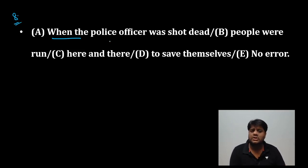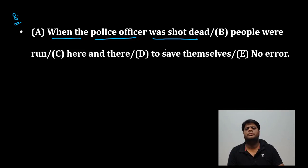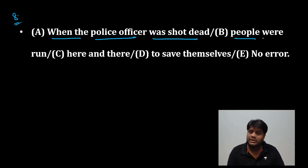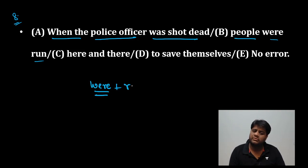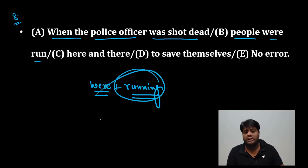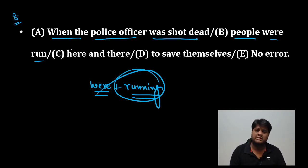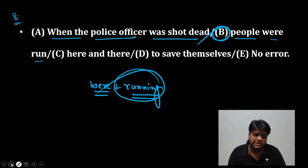Question number 8: 'When the police officer was shot' — जब police officer को गोली मारी गई, बिल्कुल सही, passive है। 'People were run here and there to save themselves' — यहाँ 'were run' नहीं, 'people were running here and there to save themselves' सही है। Answer B है।